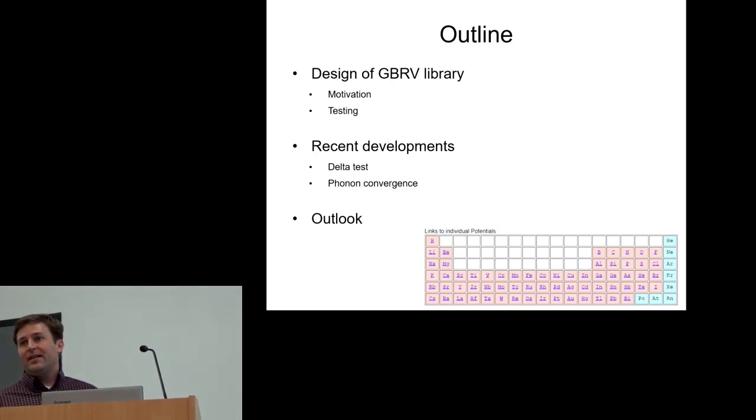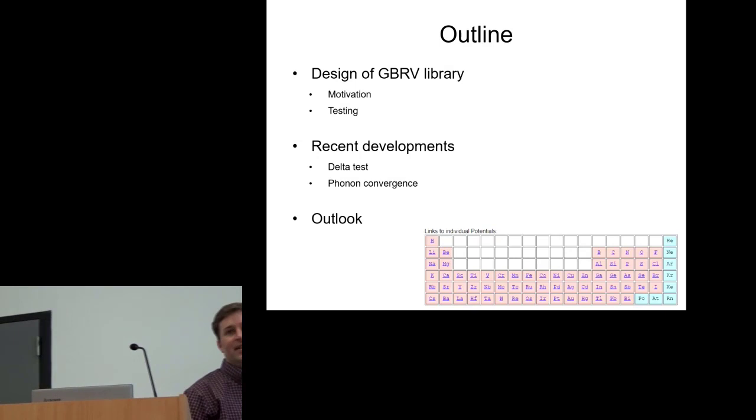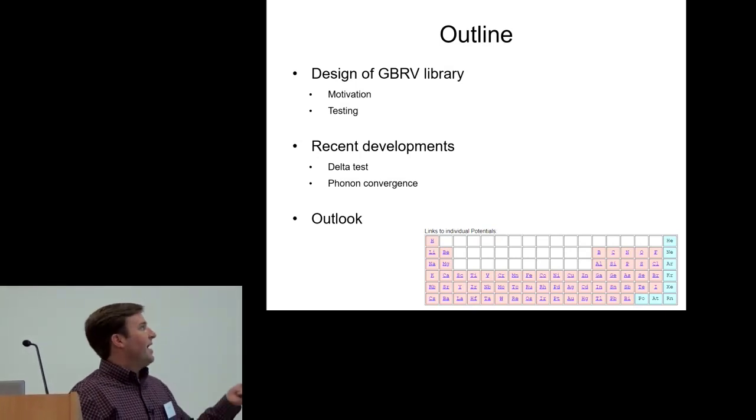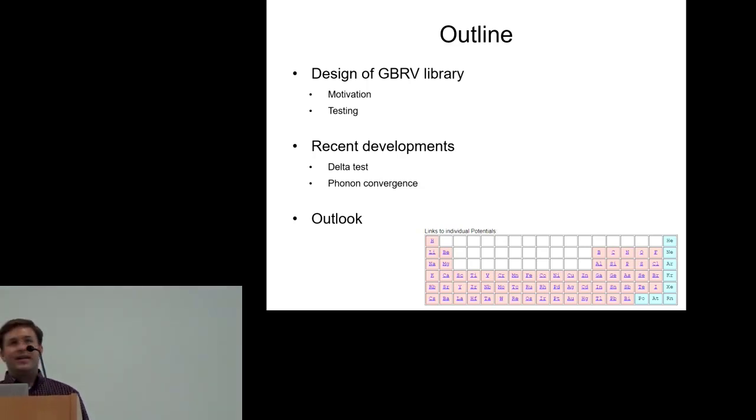An outline of my talk: a lot of the ideas will be familiar if you've been listening to the previous talks. The basic idea is I'm going to start with the initial design of the GBRV library, including the motivation, the testing we designed, and then go through how the library has evolved with time as new testing has become available and how I've improved a few of the convergence properties.